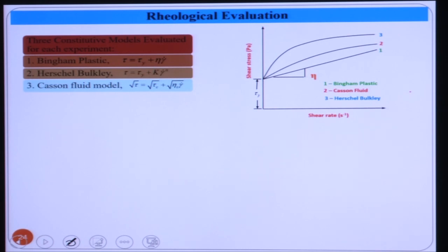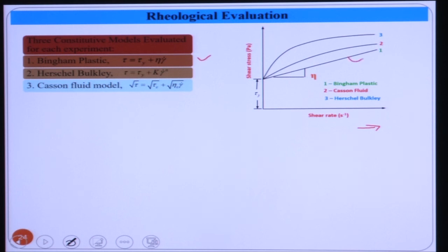MR fluid is represented by three different non-Newtonian models. The first and most popular is the Bingham plastic model: τ = τ_y + η·γ̇, where τ_y is the yield stress, η is the plastic viscosity, and γ̇ is the shear rate. In the Bingham plastic model, the fluid only flows when the applied shear stress exceeds the yield stress.